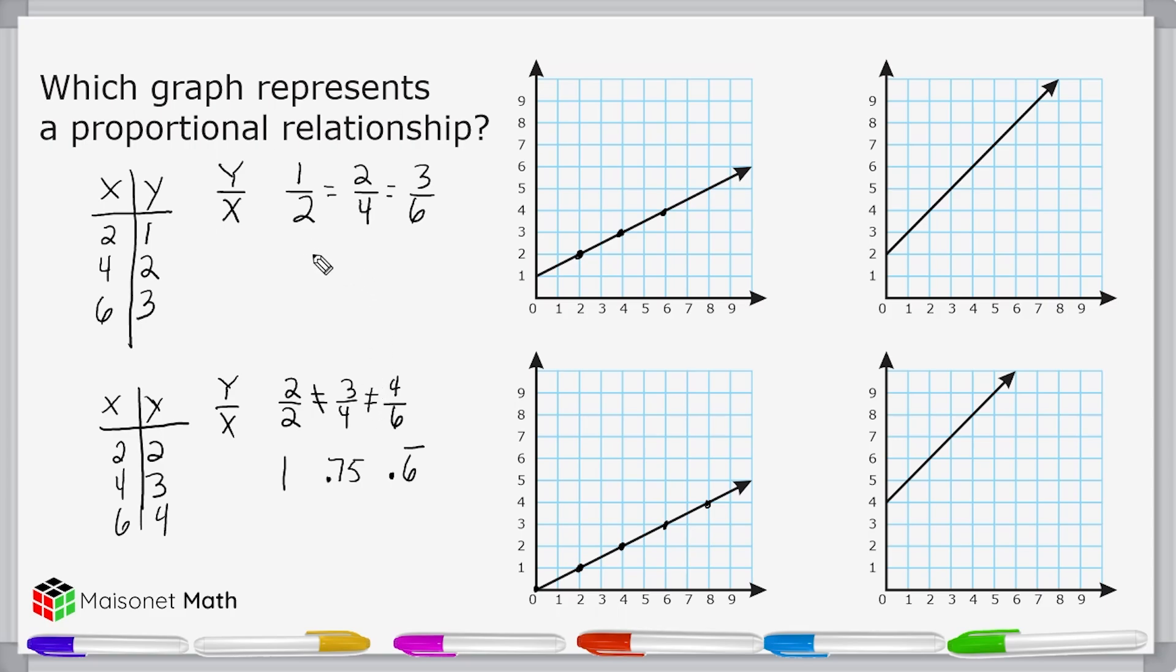Whenever you do have ratios that are equivalent to each other, the values formed by the y to the x value is called the constant of proportionality. And all of these ratios have the same value, which is 1 half or 0.5.